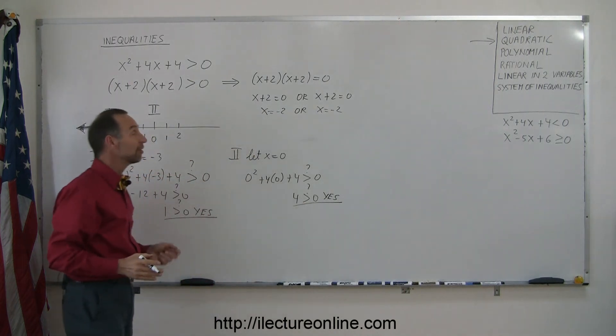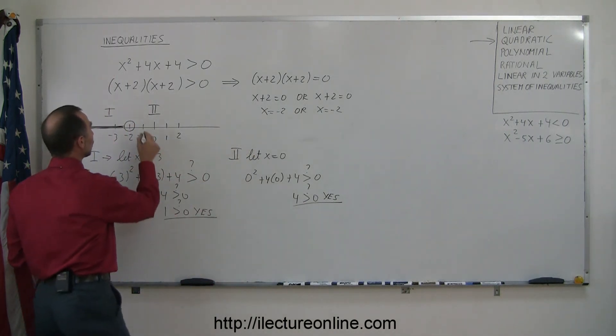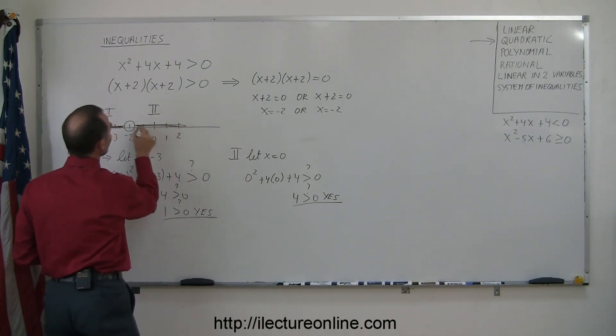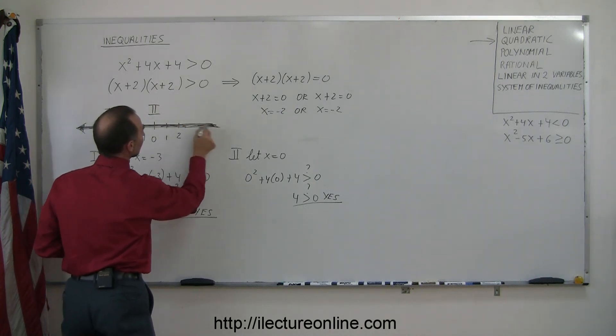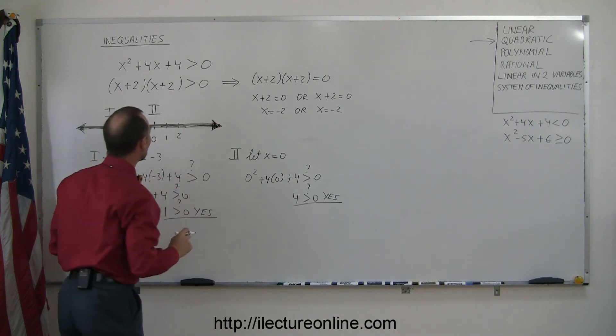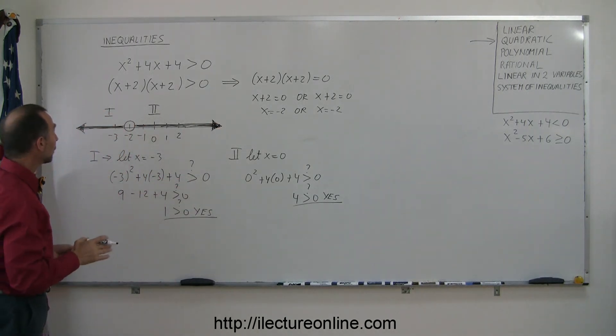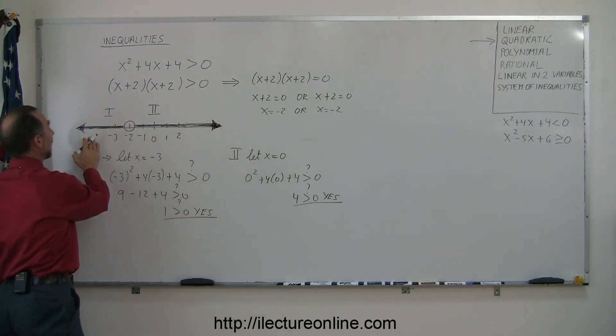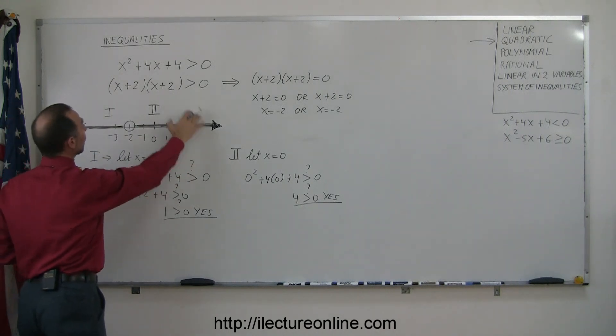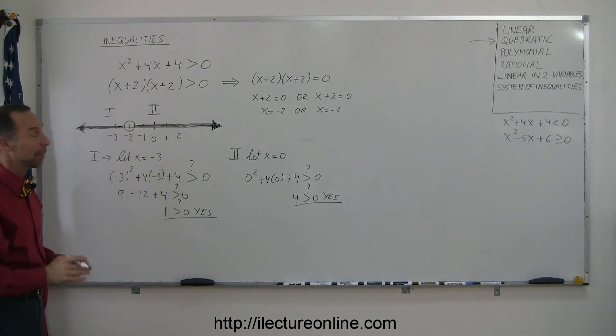Which means in this case, the right side is also part of the solution, so we go ahead and indicate that by drawing a solid line here and an arrow like so. And so that means that all the points to the left of -2 and all the points to the right of -2 are part of the solution to this inequality. The only point -2 is not part of the solution.